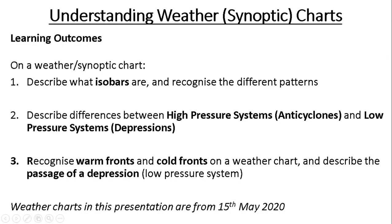We're going to understand weather or synoptic charts, looking at the different symbols including isobars that join points of equal air pressure. We'll think about the differences between high pressure systems or anti-cyclones and low pressure systems or depressions, with warm fronts and cold fronts being associated with a passage of a depression as it passes west to east over the British Isles.